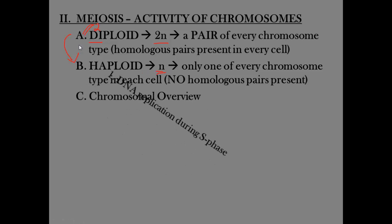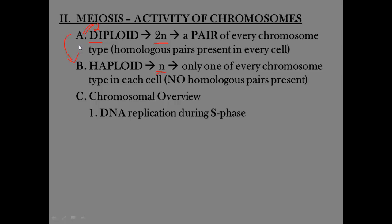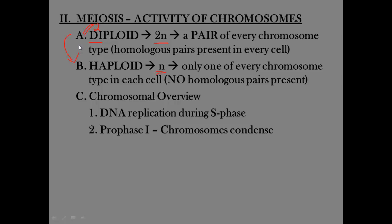Let's remind ourselves of a few things. DNA replicates during the S phase — this still happens in a cell that's going to go through meiosis. Instead of having one division, we're going to have two. So we're going to have a PMAT 1 and a PMAT 2 — two different sets of prophase, metaphase, anaphase, telophase. In prophase one, same things happen as in mitosis: chromosomes condense, they get visible, the nuclear envelope disappears. Here's the difference though — my homologous pairs literally pair up and join together.